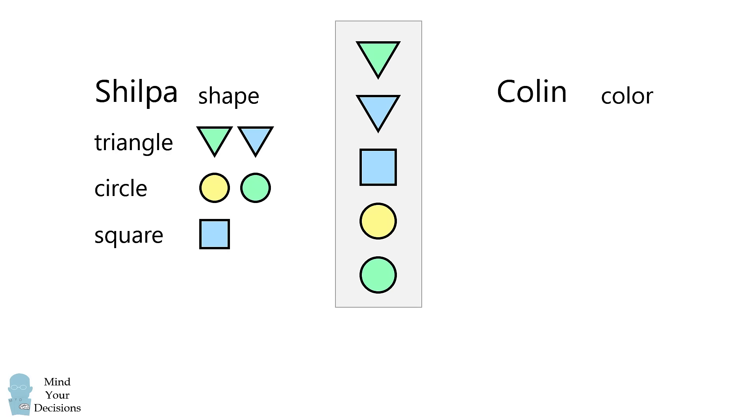Colin was privately told the color of the object. If he was told green, he would know it's either the green triangle or the green circle. If he was told blue, he would know it's either the blue square or the blue triangle. If he was told yellow, then he would have known it was the yellow circle.